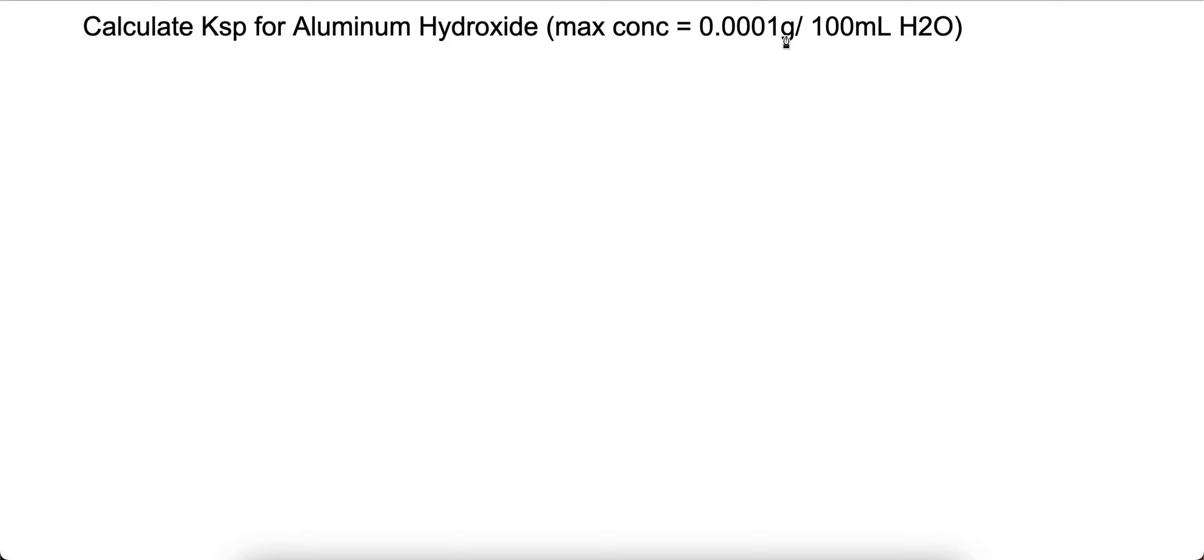What we're going to do is convert this to per liters of H2O so we know how much precipitate will be formed. So if we multiply this by 10, you'll get 0.001 grams per liter of H2O.